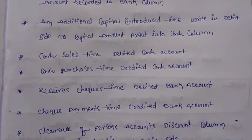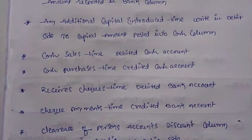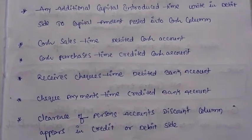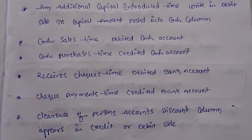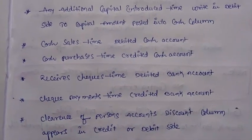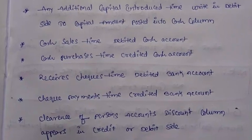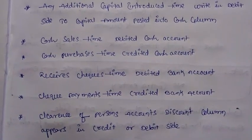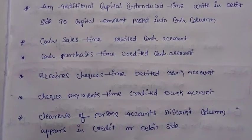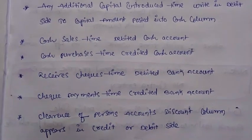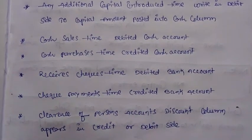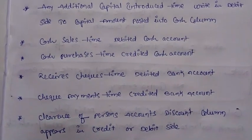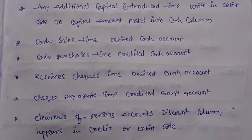The general entry is cash account debit to capital account. For cash sales, debit the cash account; for cash purchases, credit the cash account. If receipts are received by checks, debit the bank account. If payments are made by checks, credit the bank account.